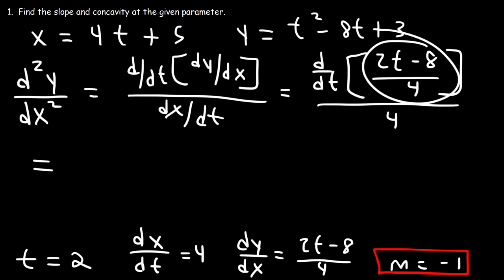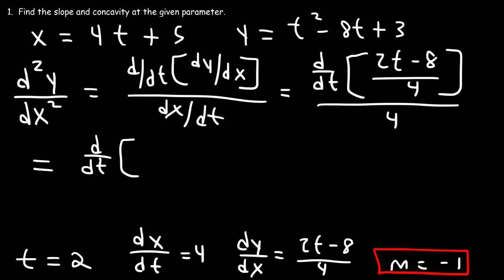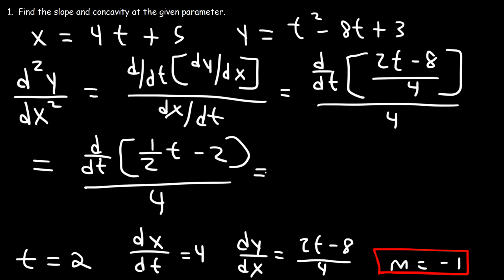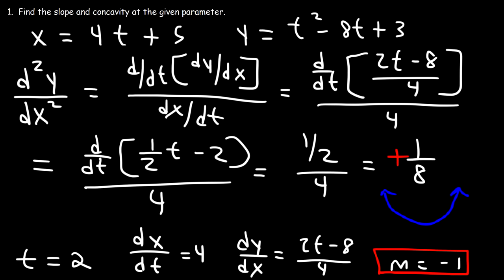So let's simplify this fraction. 2t divided by 4 is basically t over 2, or you can write that as one half t. And negative 8 divided by 4, that's negative 2. So the derivative of one half t is one half, and the derivative of negative 2 is 0. So we have one half over 4, and so the second derivative is 1 over 8. Because the second derivative is positive, the curve is concave up at this point, that is when t is equal to 2.